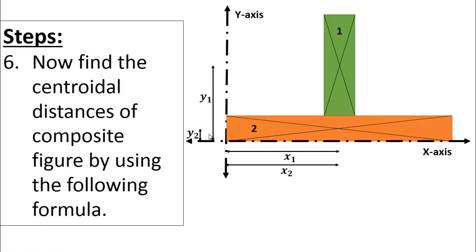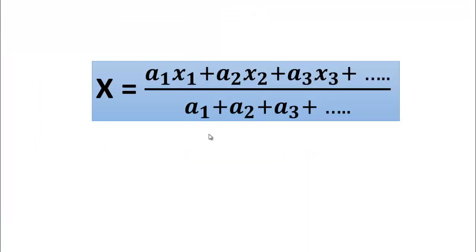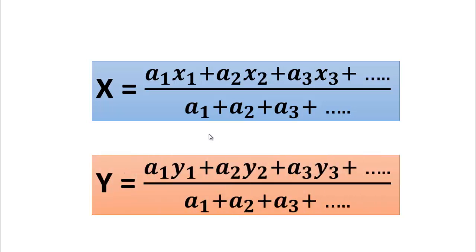The last step is to find the centroidal distance of the composite figure using the following formula. The horizontal centroidal distance x̄ equals (A1·x1 + A2·x2 + A3·x3 + ...) divided by (A1 + A2 + A3 + ...). Similarly, ȳ equals (A1·y1 + A2·y2 + A3·y3 + ...) divided by (A1 + A2 + A3 + ...).